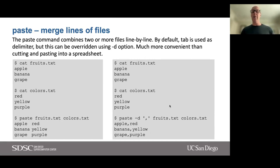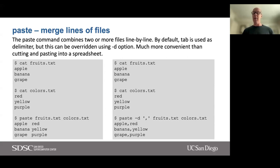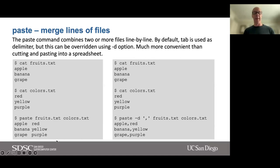If we want to change that delimiter, we can use the -d option. This is really handy if you want to generate a CSV file you can then open in Excel. Same command, except now we do `paste -d ','` with a comma as the new delimiter, followed by my two files. Now my output is apple,red — banana,yellow — grape,purple. So we now have something we can easily import into Excel.